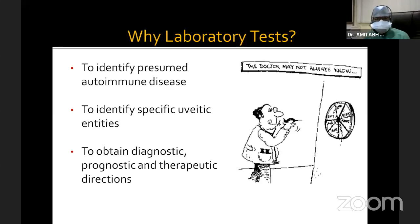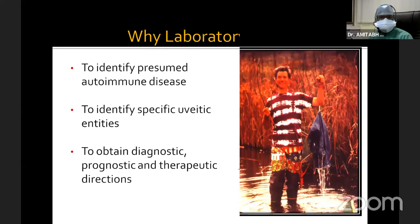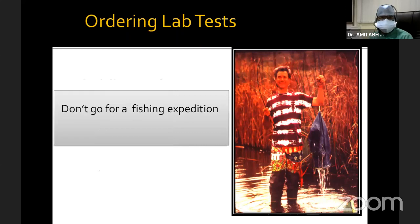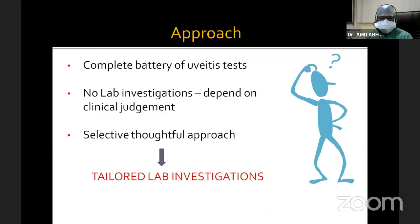So why would we do laboratory tests? It would be to identify presumed autoimmune disease, to identify specific uveitic entities, and to obtain diagnostic, prognostic, and therapeutic directions. Having said that, I don't think we should go for a fishing expedition. There could be two approaches: a completely empirical approach or a totally lab-dependent approach. But I think the most practical approach is a tailored lab investigation on a case-to-case basis.